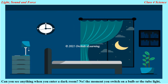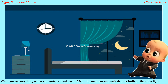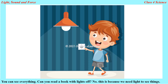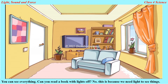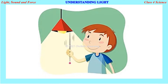Can you see anything when you enter a dark room? No. The moment you switch on a bulb or the tube light, you can see everything. Can you read a book with the lights off? No. This is because we need light to see things.